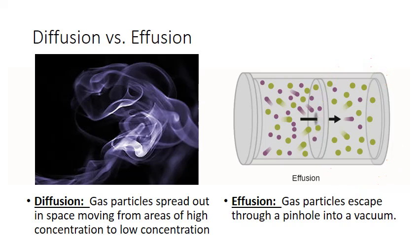Now notice that there are more green spheres moving into the right side of the container than there are purple spheres. And this is because different gas particles move at different speeds. And the heavier a gas particle is, the slower it moves. This is the central idea behind Graham's law of effusion.